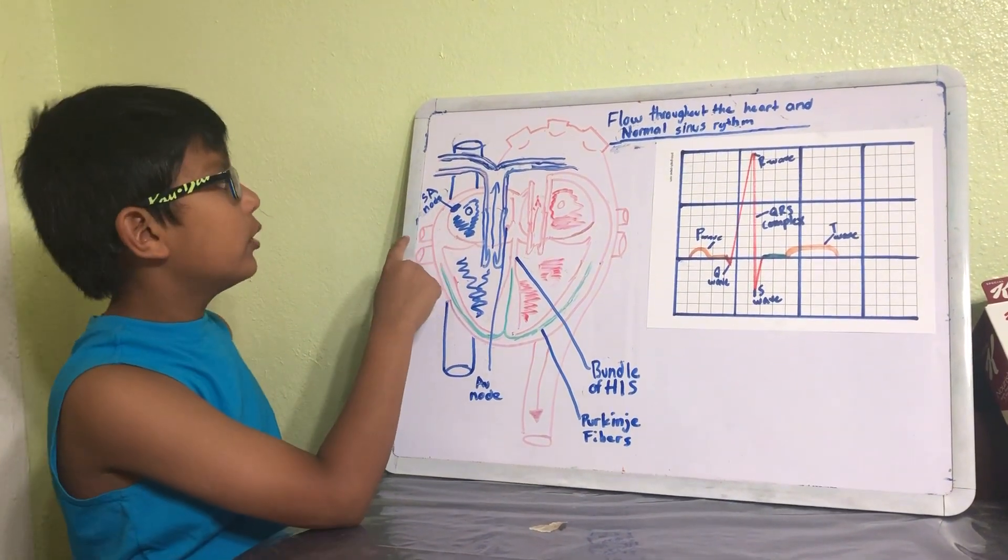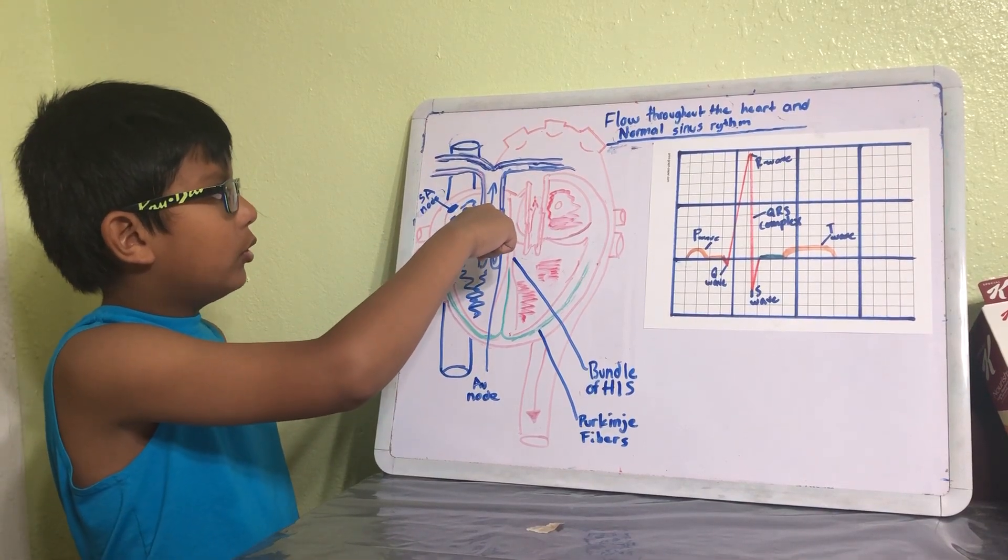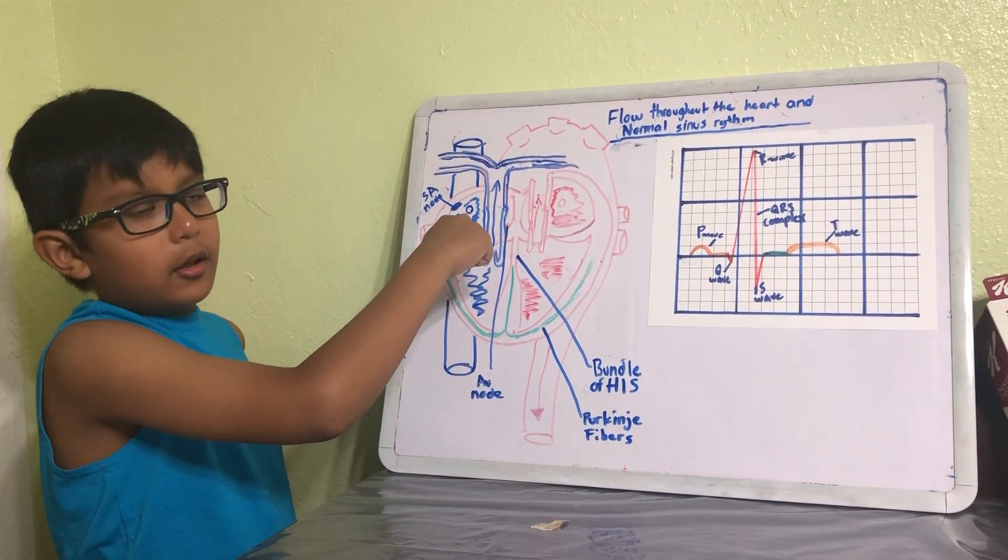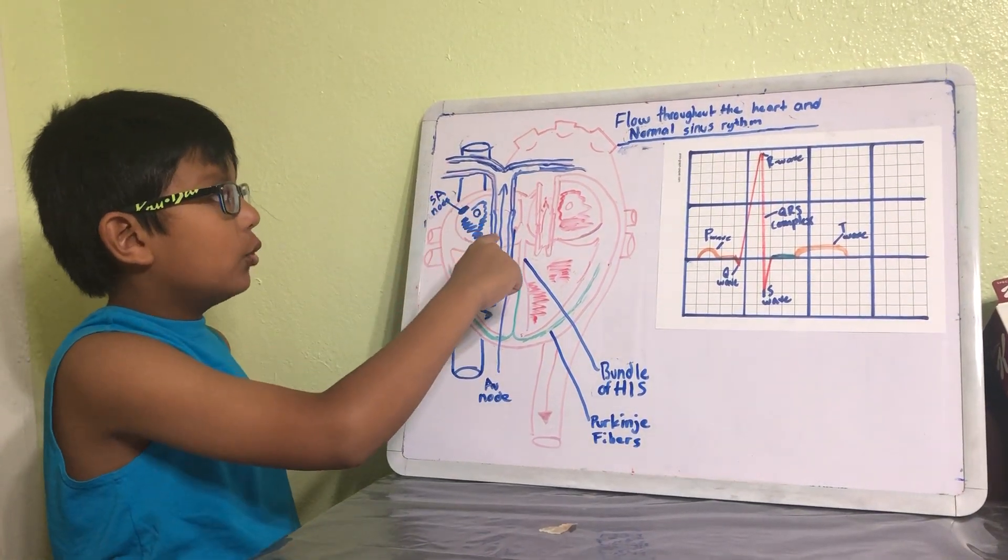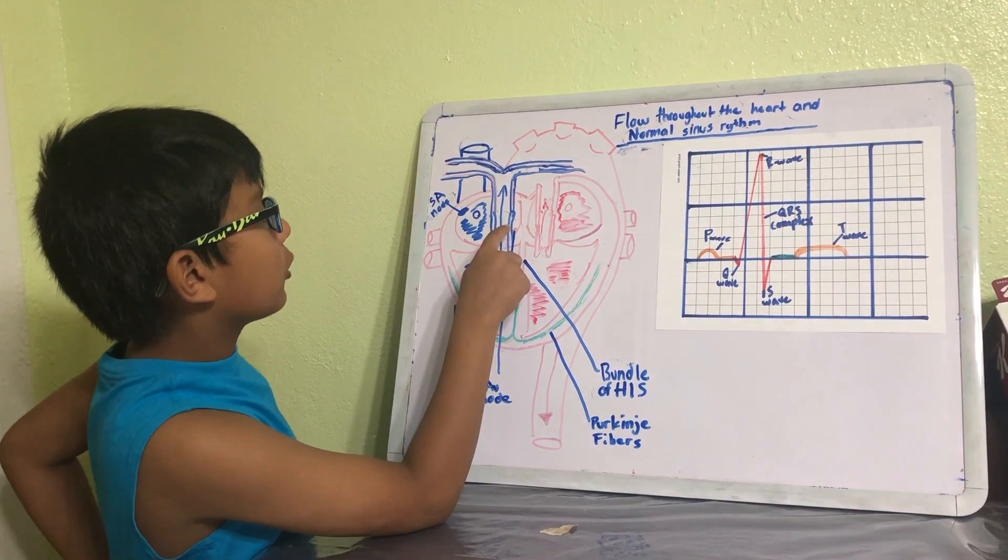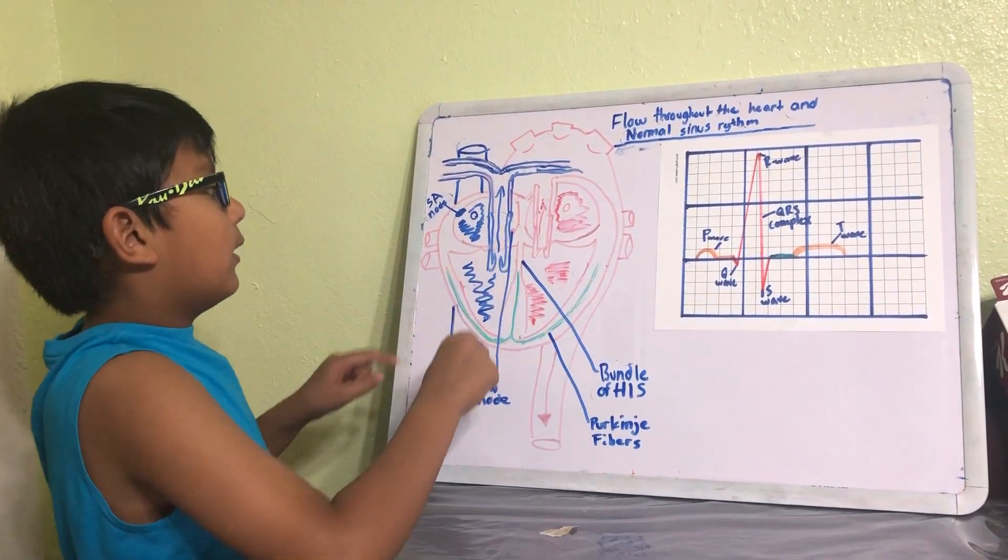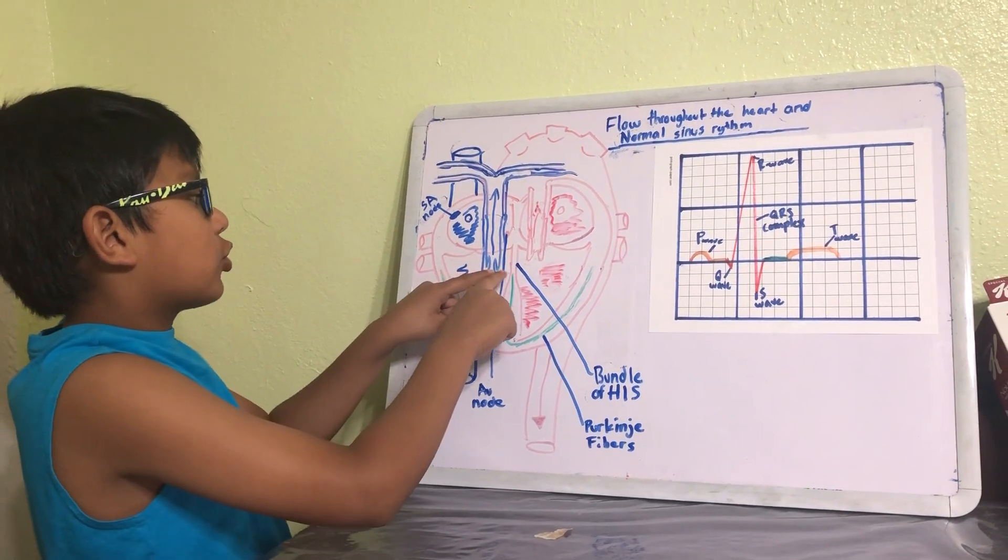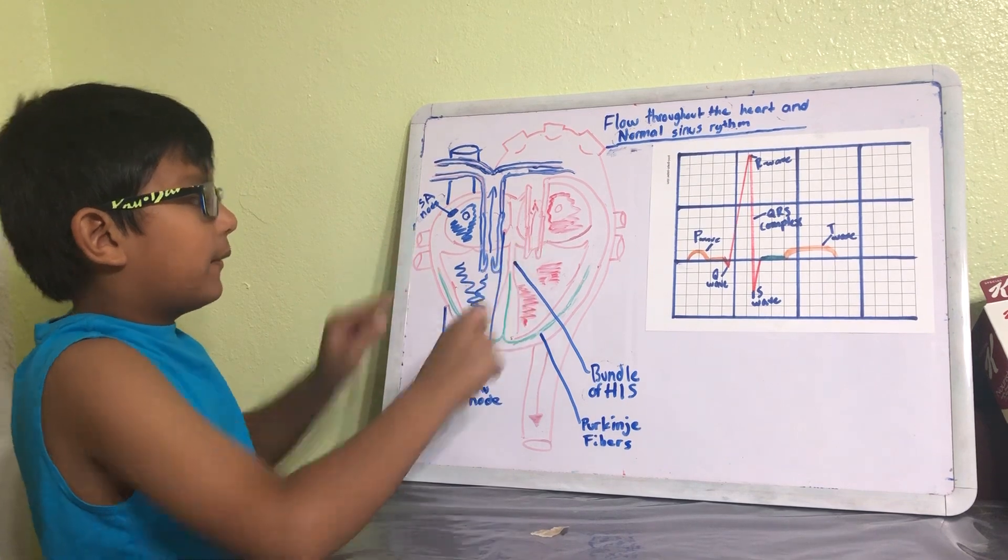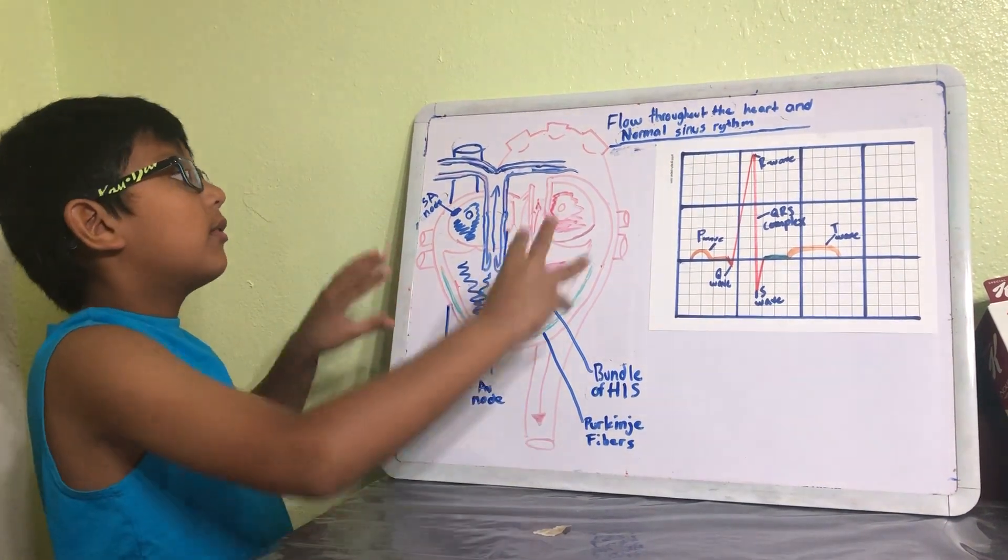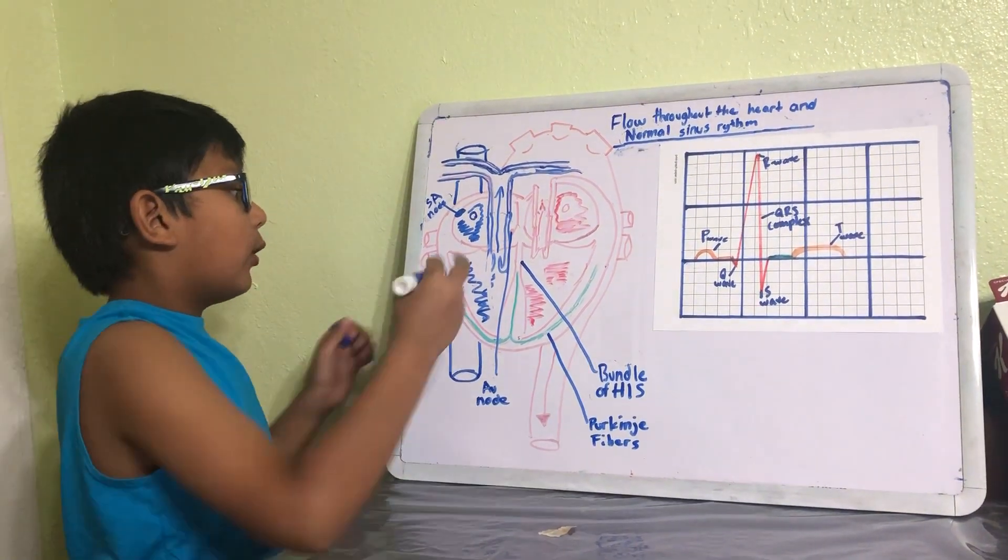And then we go into this AV node, or if you want to put it in word form, sinoatrial node into the atrioventricular node. Then we come down here into the bundle of His, then this will send an electrical signal to the Purkinje fibers to make the ventricle contract and send blood through the aorta.